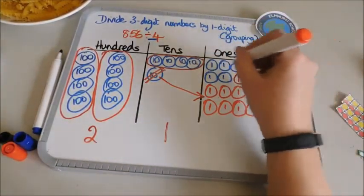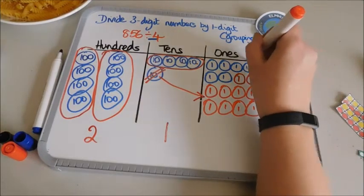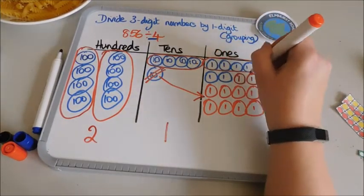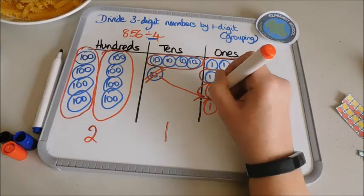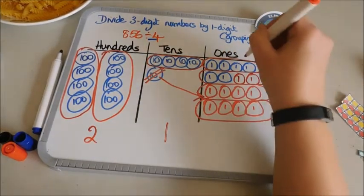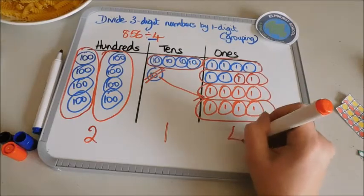Now I need to see how many groups that I can make here. So again we're looking for groups of four: 1, 2, 3, 4. How many groups have I got? 1, 2, 3, 4. Four groups.